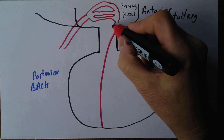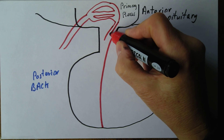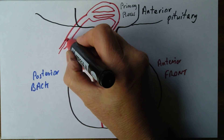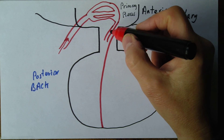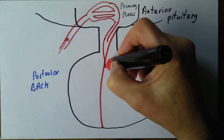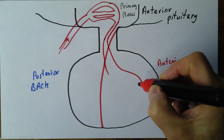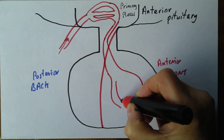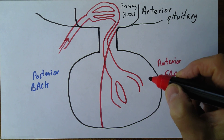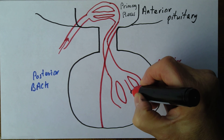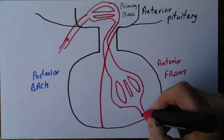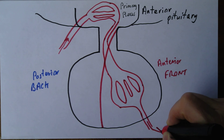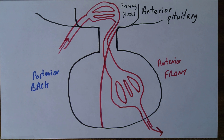There's an arterial supply coming in as normal, and then there's drainage — but this is not drainage into the systemic venous circulation. This actually drains into another secondary plexus down here in the anterior lobe of the pituitary gland, another group of capillaries, and only then does it drain into the venous drainage. This second plexus is called the secondary capillary plexus.